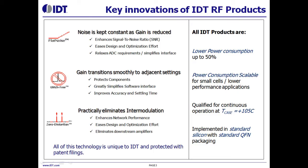Integrated digital gain control and RF and LO switches make it ideal for flexible linearization in various types of base station transmitters. IDT has three key innovations for RF devices: flat noise, glitch-free, and zero distortion. These are IDT-unique technologies protected by patent filings.